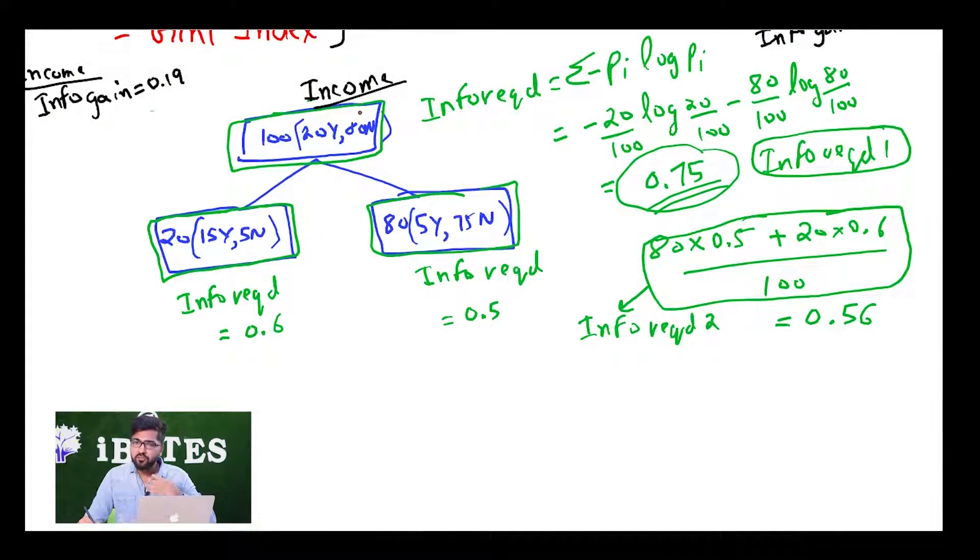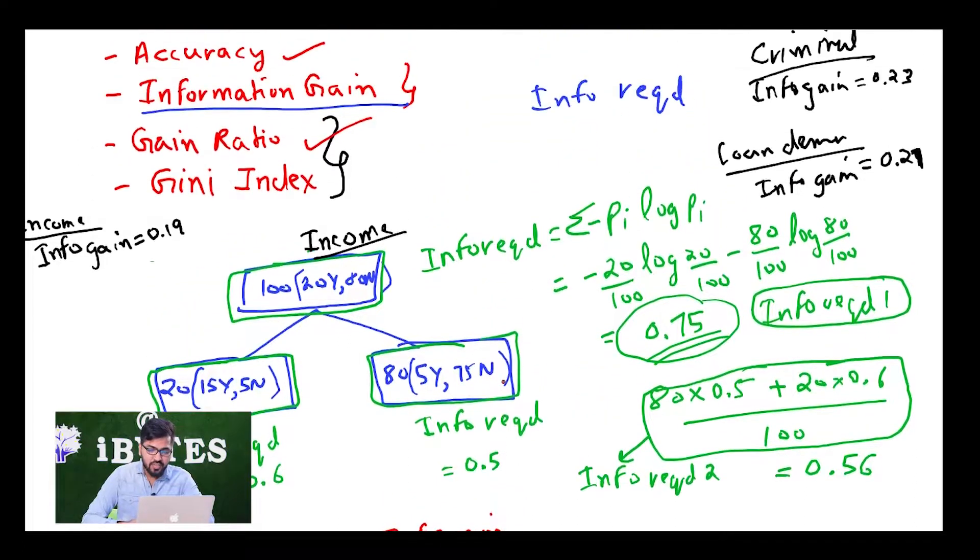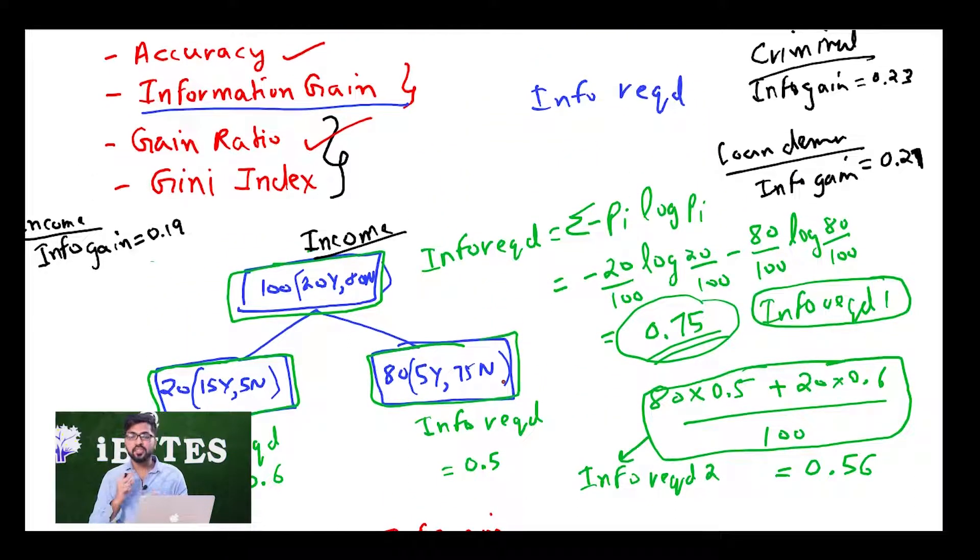What gain ratio says is that instead of comparing information gain, you should compare information gain divided by split info. So what it says is that instead of comparing directly these three values 0.19, 0.23, 0.27, just divide each of them by their split infos.